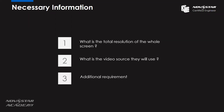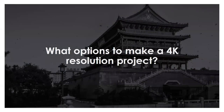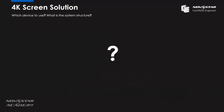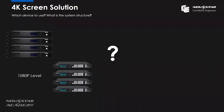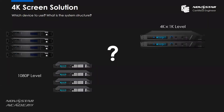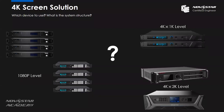The third piece of information is about additional requirements. Besides total resolution and video source, the customer may have other requirements like low latency, long distance transmission, or auto-brightness adjustment. With all this information, we can provide the customer the perfect project design. Now let's see what options we have to make a 4K resolution project — which device to use and what the system structures are. I divide the sending cards and controllers into three categories: the 1080p level, the 4K 1K level, and the 4K 2K level.